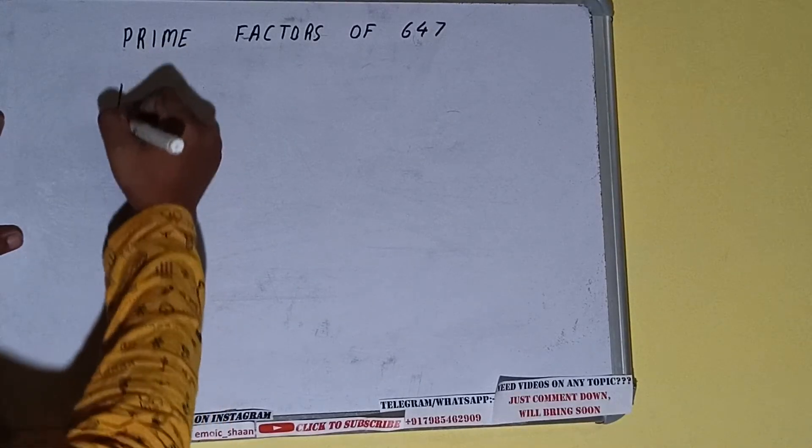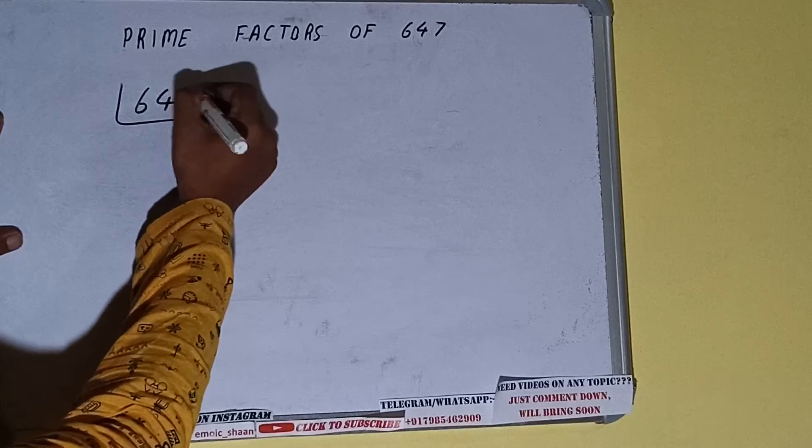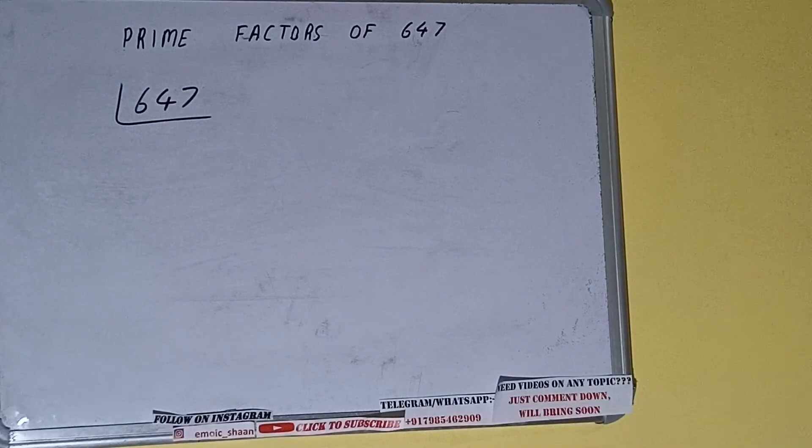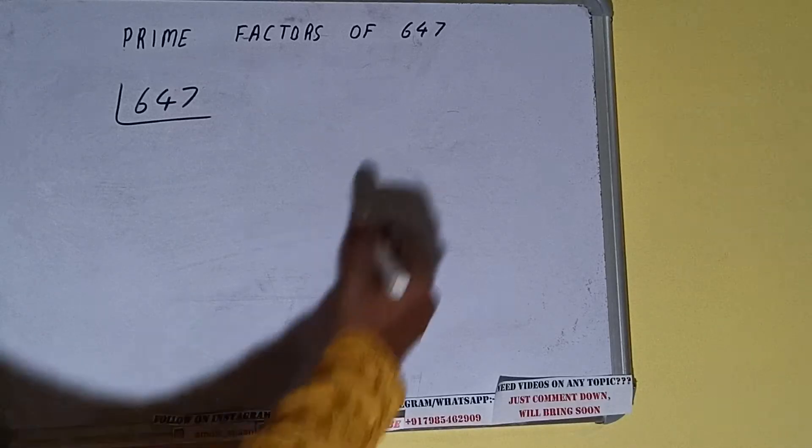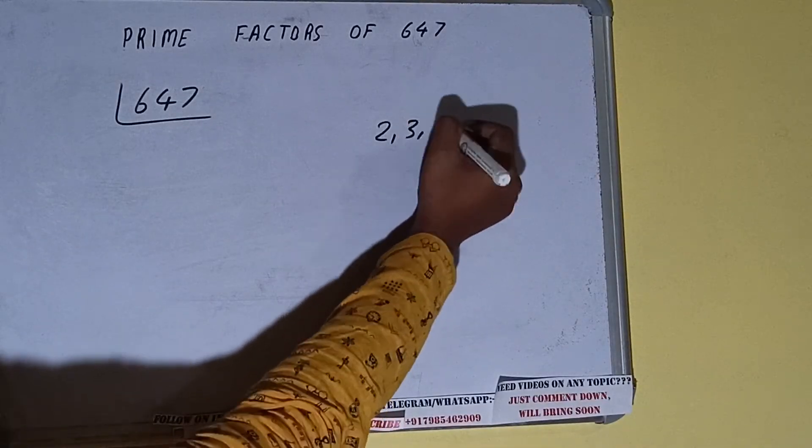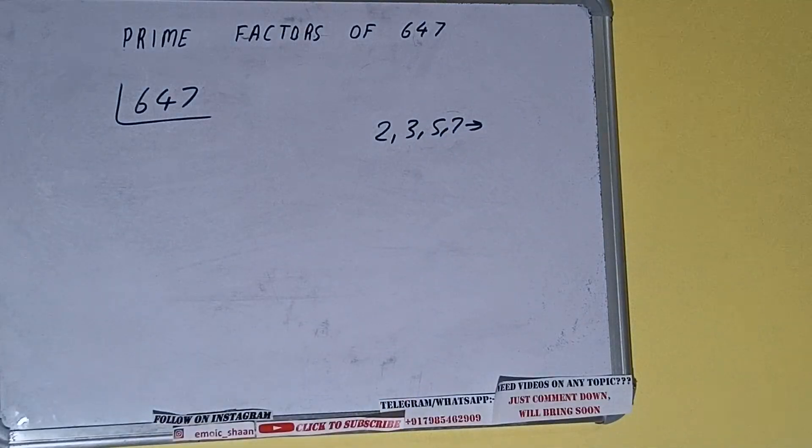First of all, we need to write the number like this. The next thing we need to know about is what are prime numbers. Prime numbers are numbers that are divisible by 1 and the number itself, like 2, 3, 5, 7, and so on. Alright.